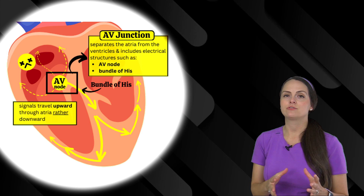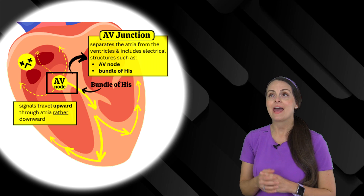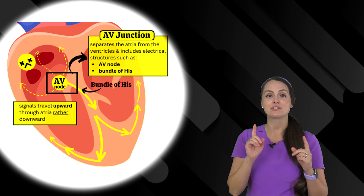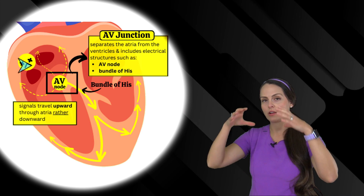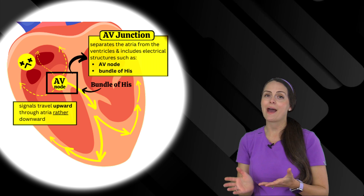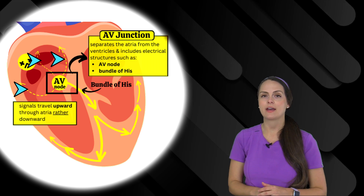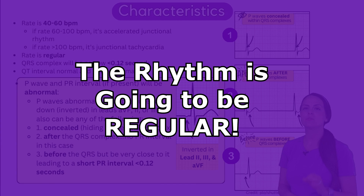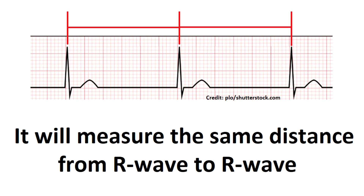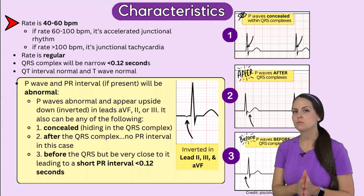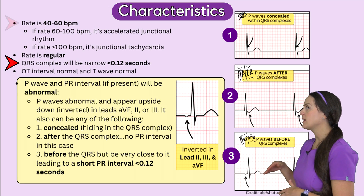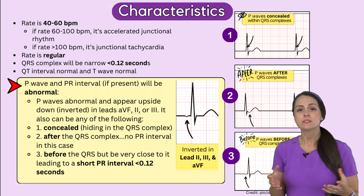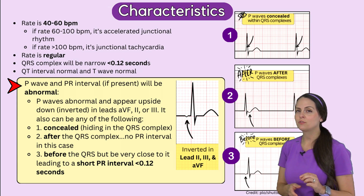We also need atrial depolarization. The AV node can send electrical signals upward to the atria in a retrograde fashion — backwards from normal, since normally signals travel downward from the SA node. This has a profound effect on the P waves. Key characteristics of junctional escape: the rhythm is regular (R wave to R wave distance is equal), and the rate is 40 to 60 beats per minute. The QRS is narrow, less than 0.12 seconds; QT interval is in range; and the T wave is normal. The biggest hallmark of this rhythm is its P waves and PR interval.